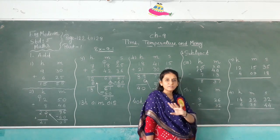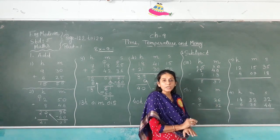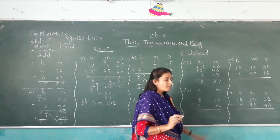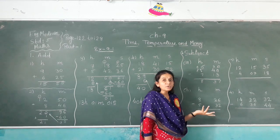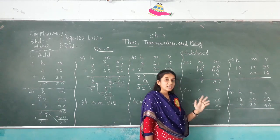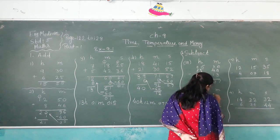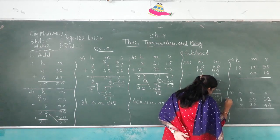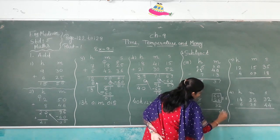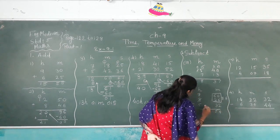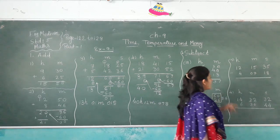Next subtraction: 26 minutes minus 32 minutes is not possible, so we borrow from hours. We get 60 from the hour column, making it 86 minus 32. Now 6 minus 2 is 4, 8 minus 3 is 5, and the hour becomes 2. Answer: 2 hours 54 minutes.